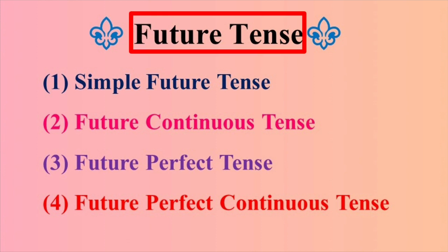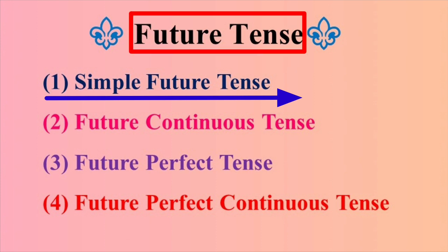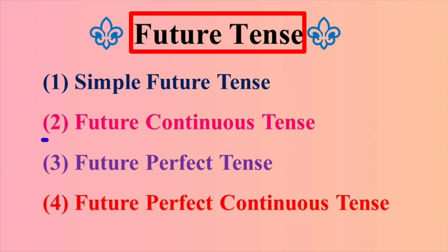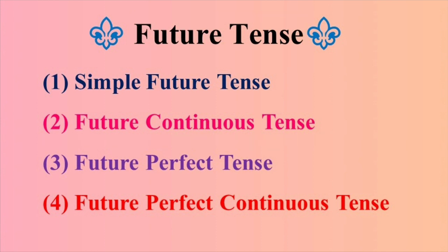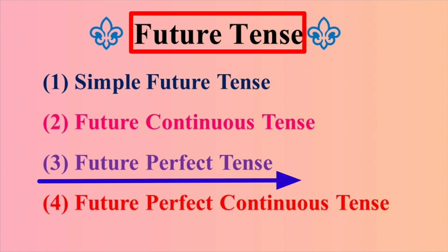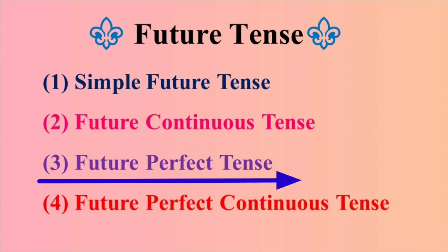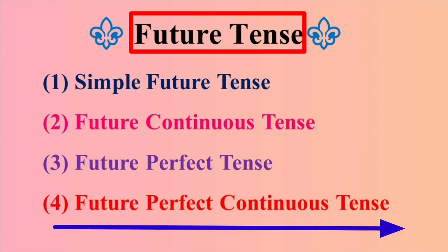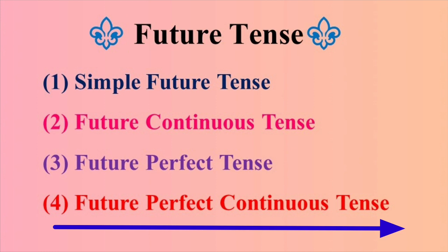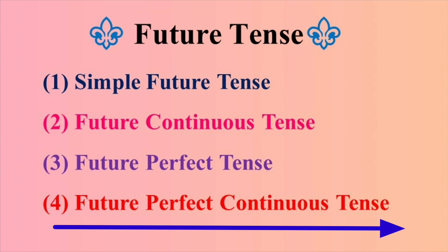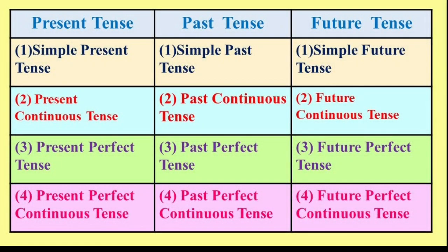Future Tense चे चार प्रकार: First, Simple Future Tense — it is also called as Future Indefinite Tense. Second, Future Continuous Tense, मन्जेच Progressive किंवा Imperfect Tense. Third, Future Perfect Tense — याला Future Perfect Non-Progressive Tense असाही नाव आहे. Fourth, Future Perfect Continuous Tense — याला Future Perfect Progressive Tense असाही म्हटला जातो. अशा प्रकारे काळाचे हे बारा उपप्रकार आहेत.